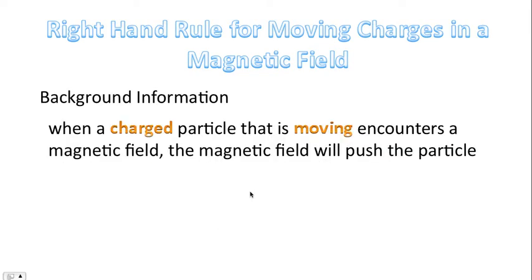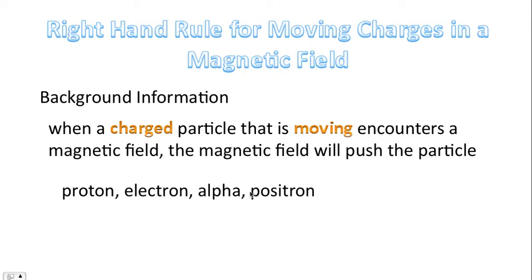So the background information. When a charged particle that is moving encounters a magnetic field, as you just saw in the video, the magnetic field will push the particle. A couple of key words here: charged — a proton is charged, an electron is charged, an alpha particle, a positron — these are all charged particles. The other key word: they have to be moving. If these particles are stationary, then there will be no push from the magnetic field. So it's got to be charged and it's got to be moving for the magnetic field to push these particles.